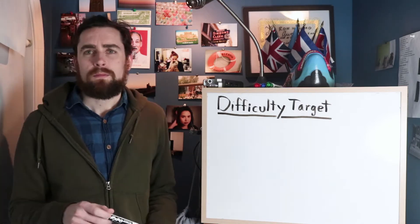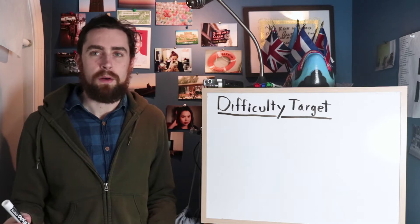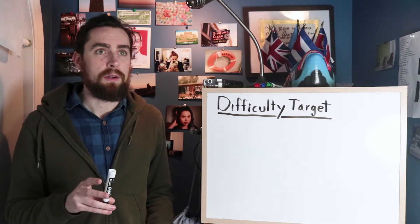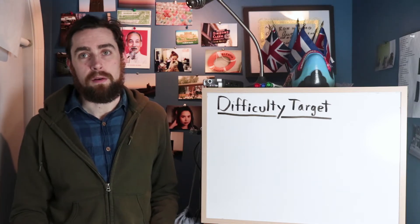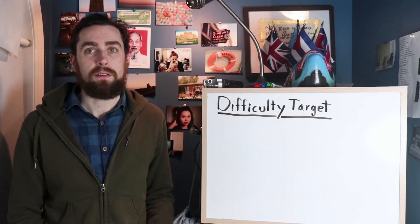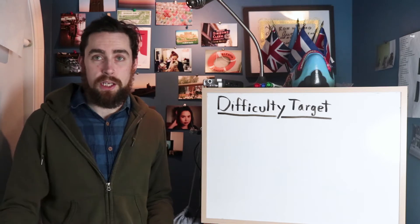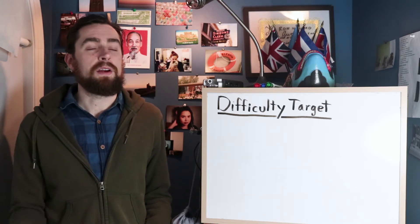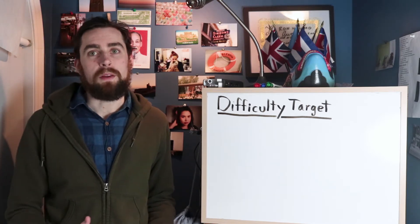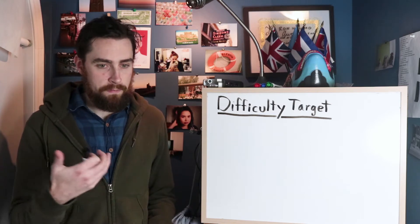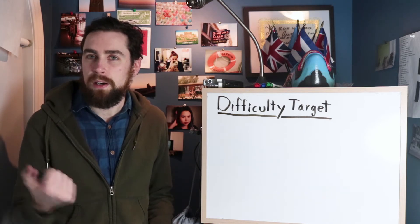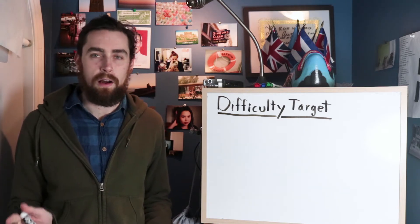Just as a bit of background, the way Bitcoin works is that a new block is added to the Bitcoin blockchain about every 10 minutes. By block I mean another set of transactions, and that block is added to the blockchain, which is the ledger of all the transactions that have occurred in Bitcoin. But where does this 10-minute number come from? It's not like there's some guy sitting in a room with a stopwatch adding a block every 10 minutes — that's not how it works at all.